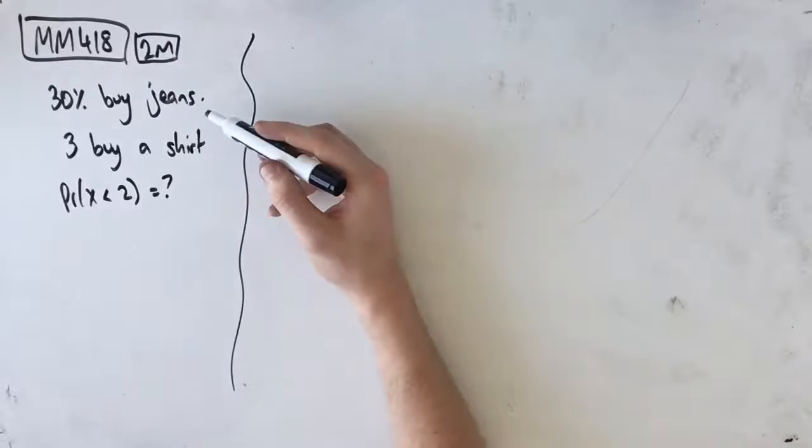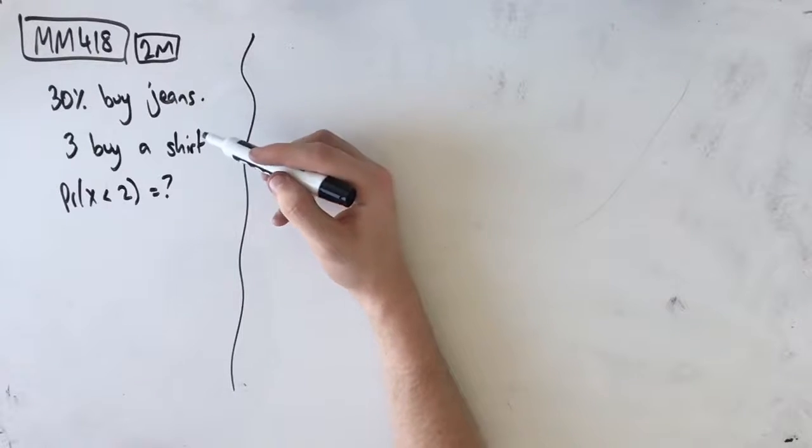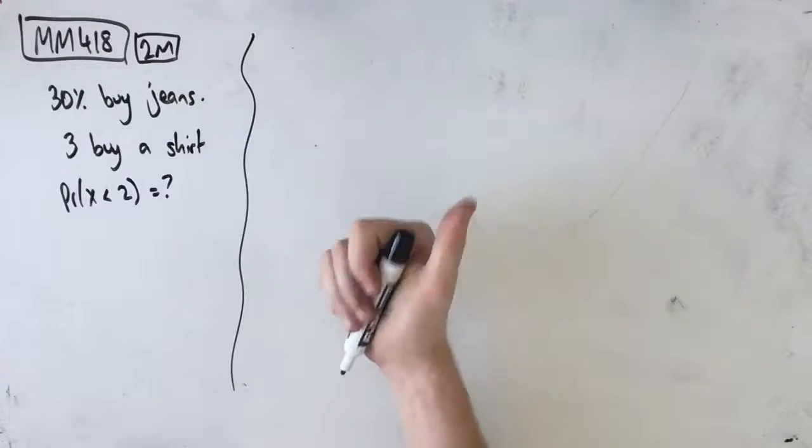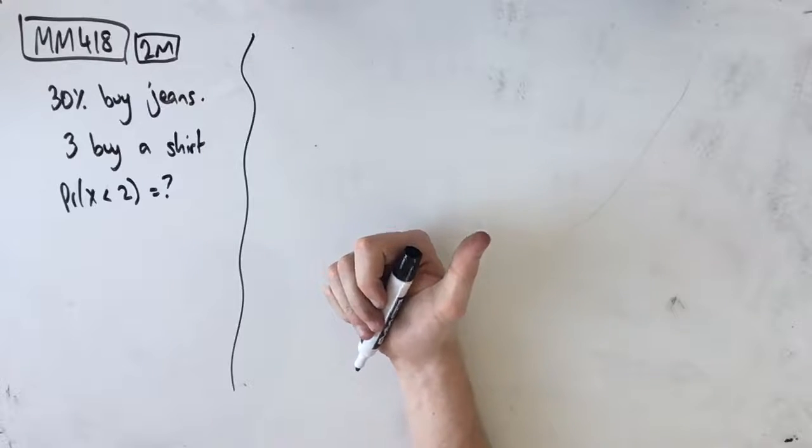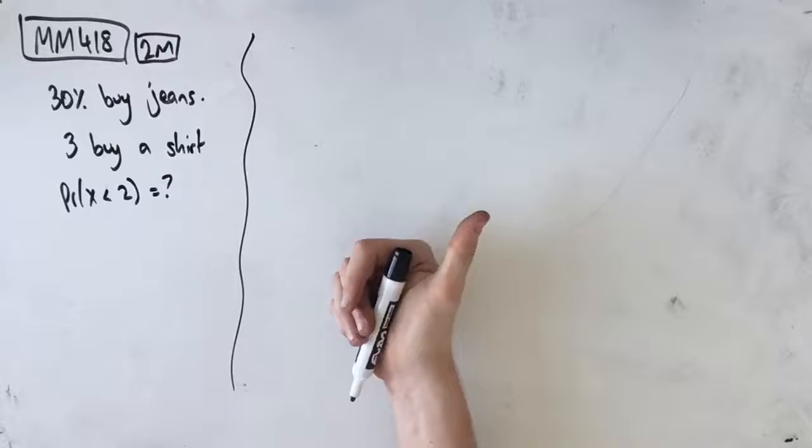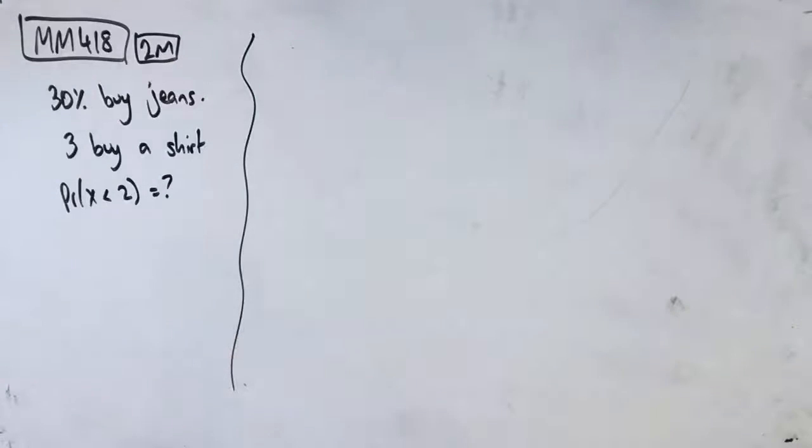Because each person who goes in there has a set chance to buy something, a set chance to have a success in the eyes of this trial. A success is that they buy jeans and a failure is that they don't buy jeans. There's no other outcome. They can either buy them or they can't, which tells us we have to deal with binomial distribution.